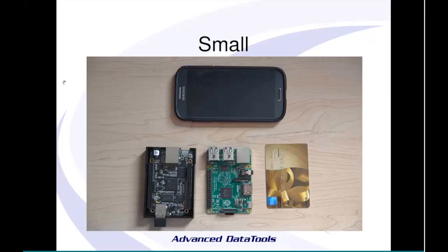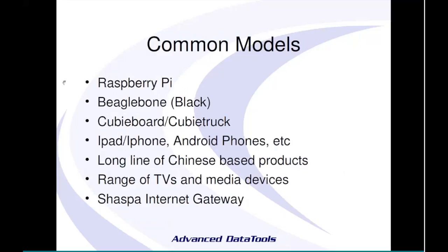Some common models: the Raspberry Pi was the first to hit wide adoption. The BeagleBone Black is another low-cost device running about $50. Your iPad, iPhone, Android phone — most phones out there — are ARM. There's a huge list of Chinese-based products: things that plug into your TV, mini Android computers, video game systems. A huge number of TVs now embed the ARM chip directly to power their 'smart TV' features.